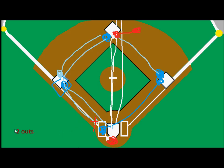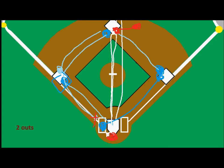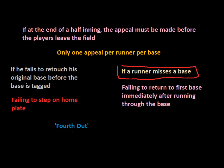So we would have three outs, no run scored, and the inning would be over. Because the defense elected to take that appeal, it would be the quote-unquote fourth out in the inning — and that is where the fourth out can come into play.